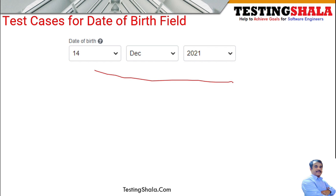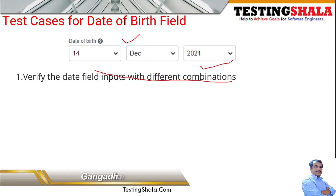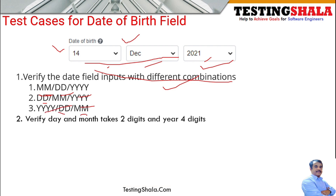The first type is a text input date field. You should be able to verify this date field with all different combinations — it could be month, date, and year format, displayed in any of these combinations. You should verify that days can take two digits, since 1 to 31 is the maximum. If the month is displayed as digits, then 1 to 12 only it can take.